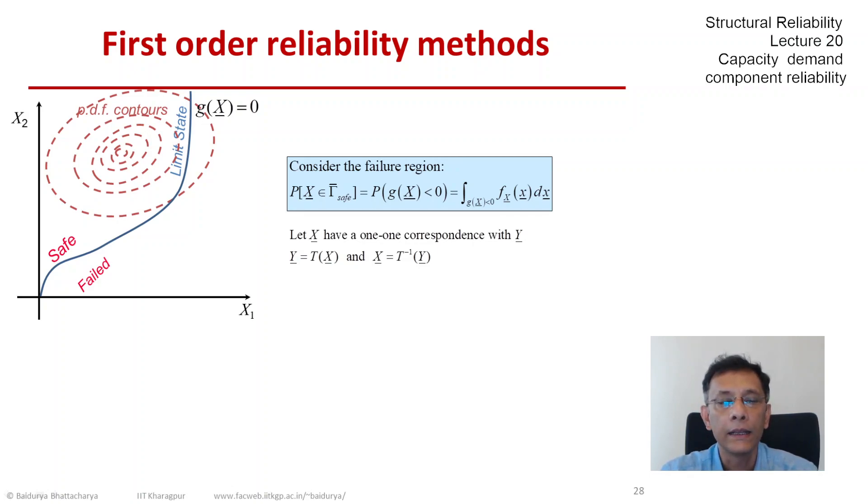Y is T(X) where T is the transformation and X is the inverse map from Y. So these functions are very well defined.